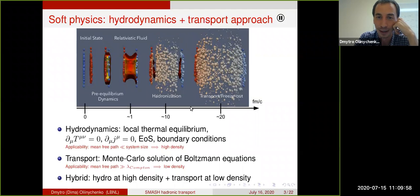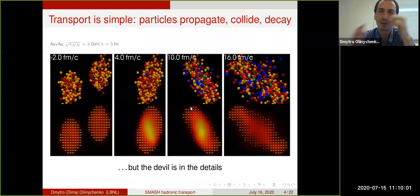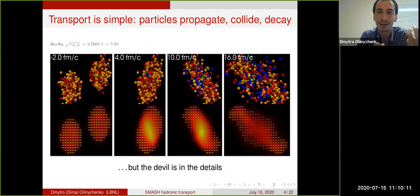Transport is a rather simple thing conceptually. You just have a set of particles with coordinates and momenta. Particles can propagate, collide, and decay, and that's it in principle. But the deal is in the details, because the question is: what particles, how exactly they propagate, how they collide, and how they decay. So let's look into it in slightly more detail.